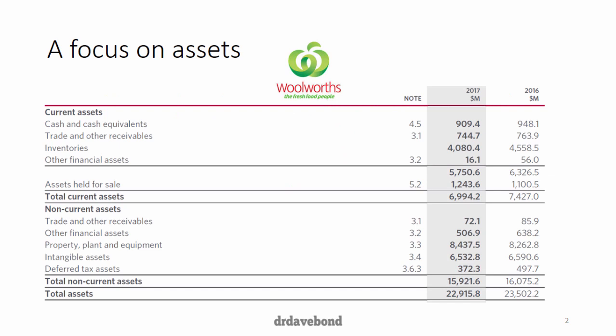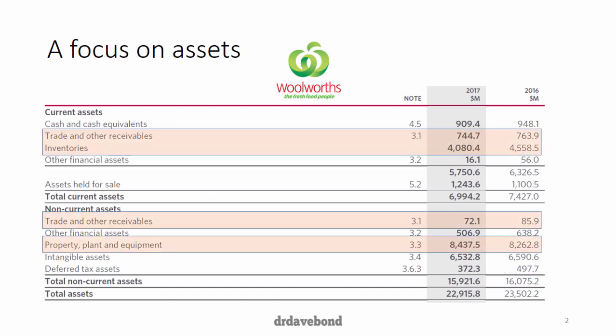The reason we chose to focus on these particular assets can be illustrated by looking at the balance sheet of Woolworths. Looking at the current and non-current assets, we see they are quite substantial compared to total assets. Receivables amount to about three quarters of a billion dollars, inventories are about four billion dollars, and property, plant and equipment is about eight and a half billion dollars. Adding those together gives you just over 13 billion dollars out of roughly 23.